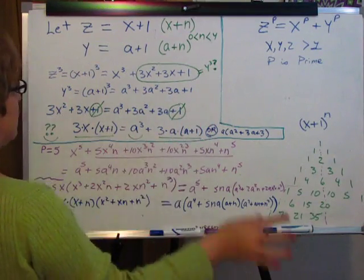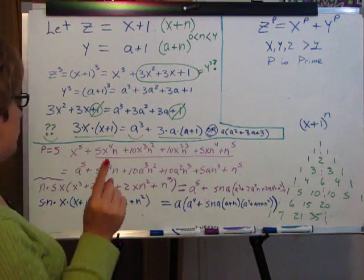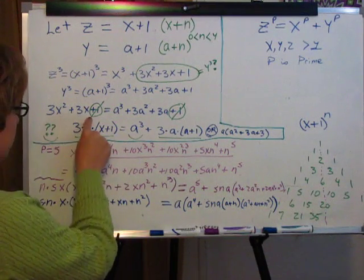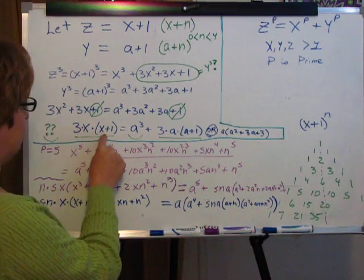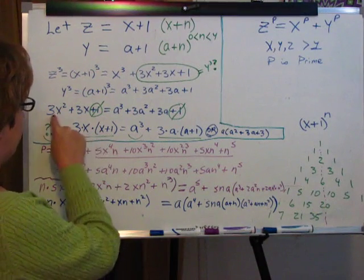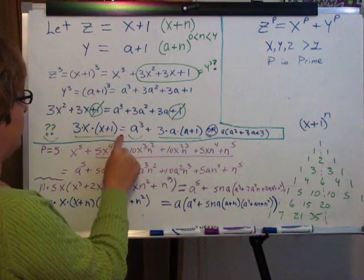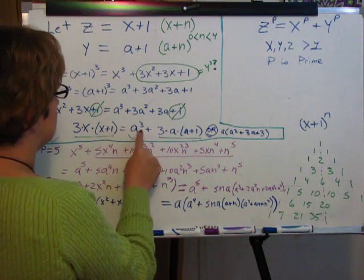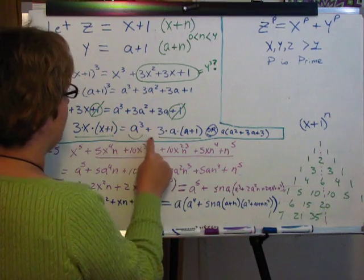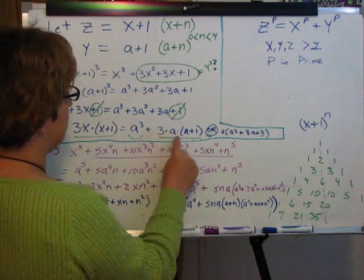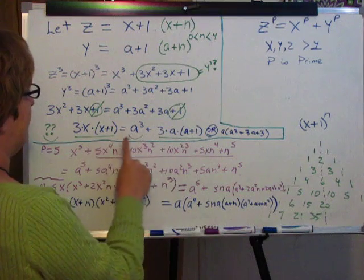Easy! If this is supposed to be y cubed, and we know this is y cubed, let's see if they're equal. We set them equal to each other. The ones nicely cancel themselves out and go away, and we end up with this little mess. Breaking this stuff down, we end up with 3 times x times x plus 1. Equals something cubed — a cubed plus 3 times a times a plus 1. Whoa! It looks exactly like that.